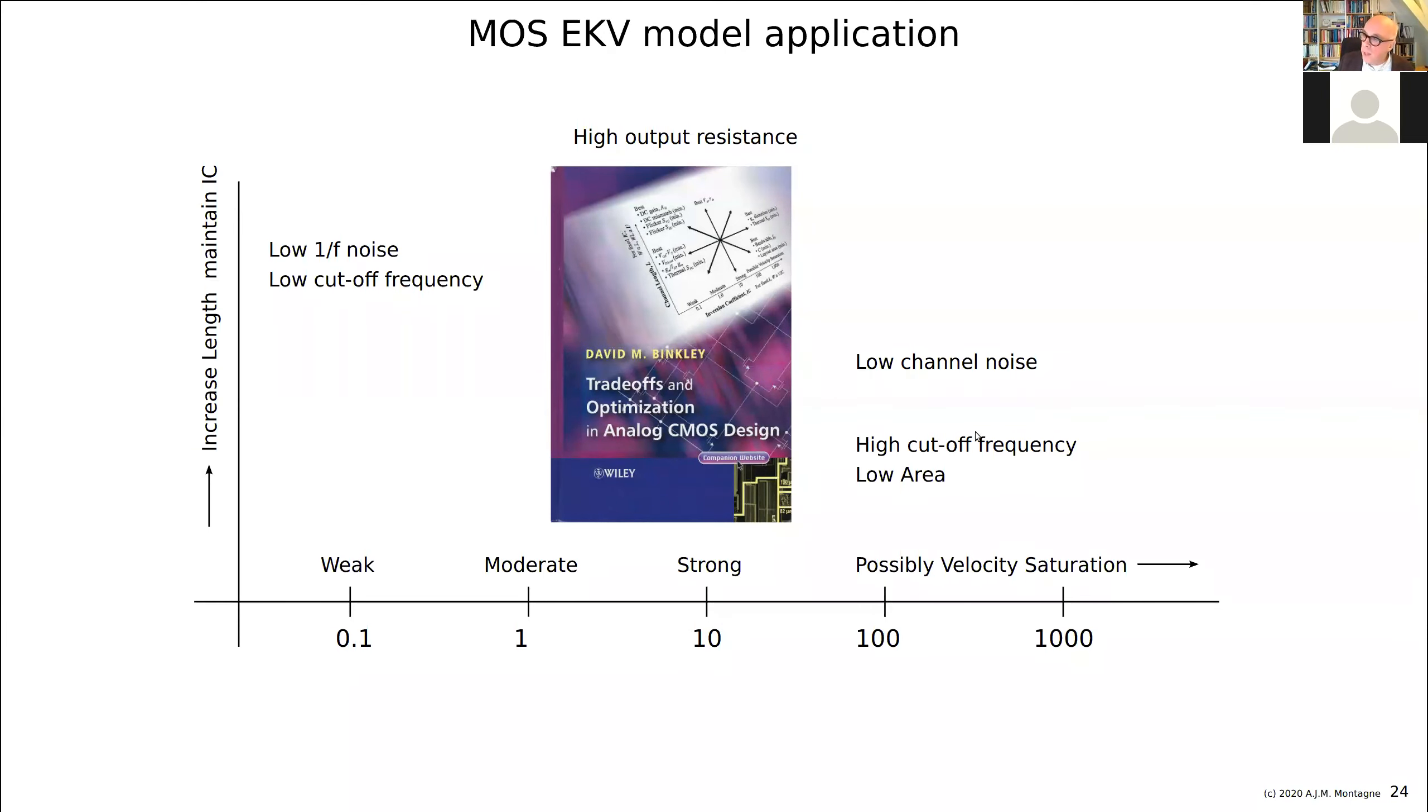So if you want to have a high cutoff frequency in a low area, you are going to operate here, almost at velocity saturation and with the length as short as possible. But if you want to have a low 1 over F noise, and you get a low cutoff frequency, I wouldn't know why you would like to have something like that.